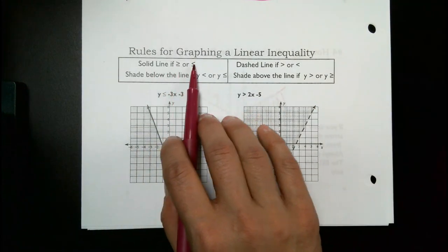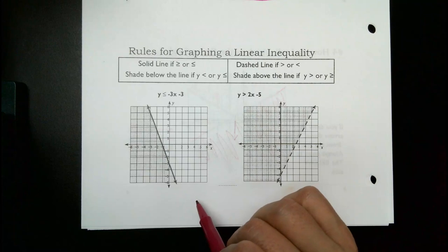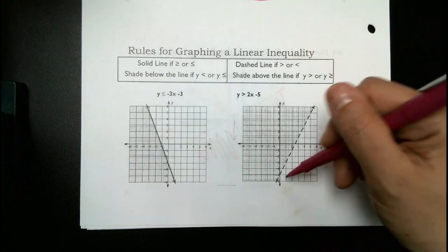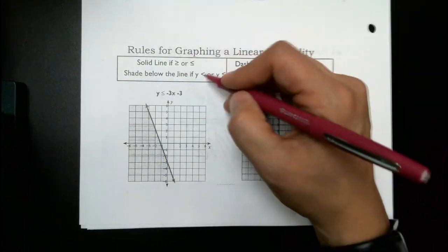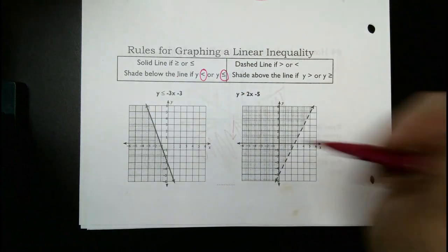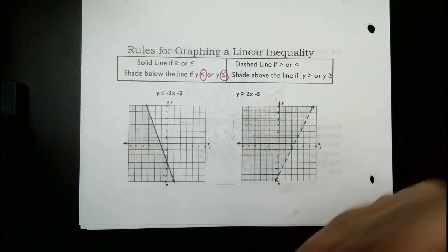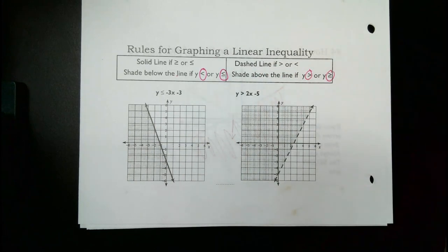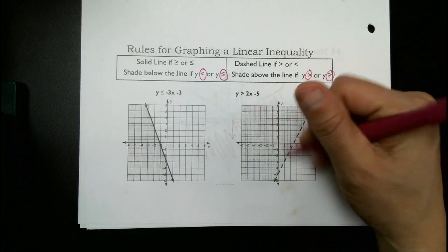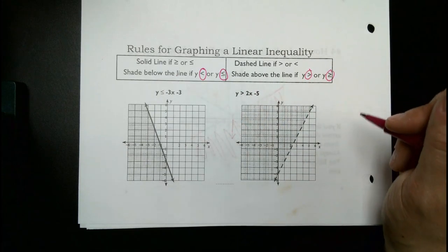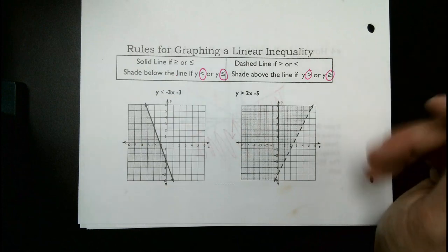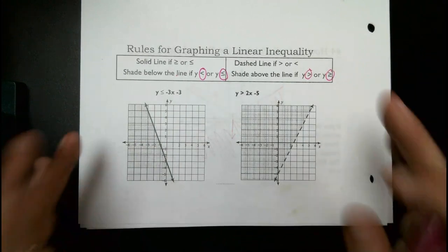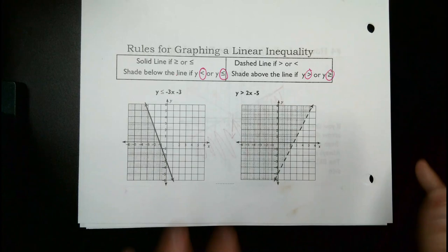Remember: don't flip it based on what your answer is going to be. A lot of people think that if their answer is going to be negative, they're supposed to flip — that's not the case. It's always determined by the number you are dividing by. Down at the bottom: if it has an equal sign it's solid, no equal sign it's dashed, shade below for less than, shade above for greater than.